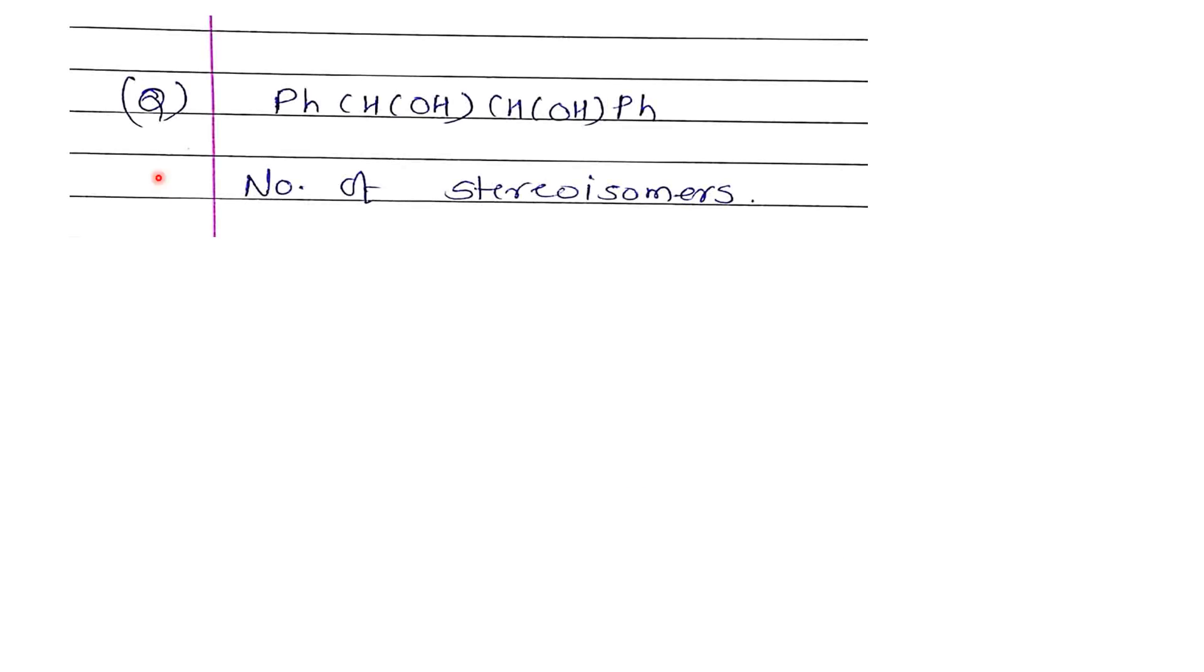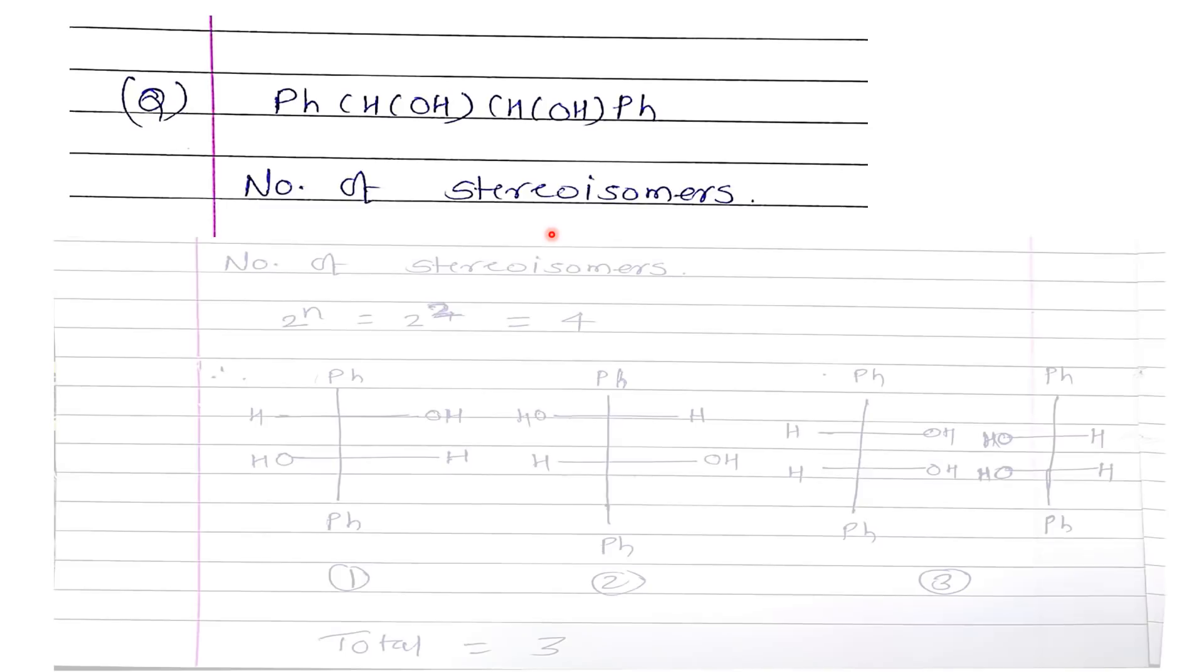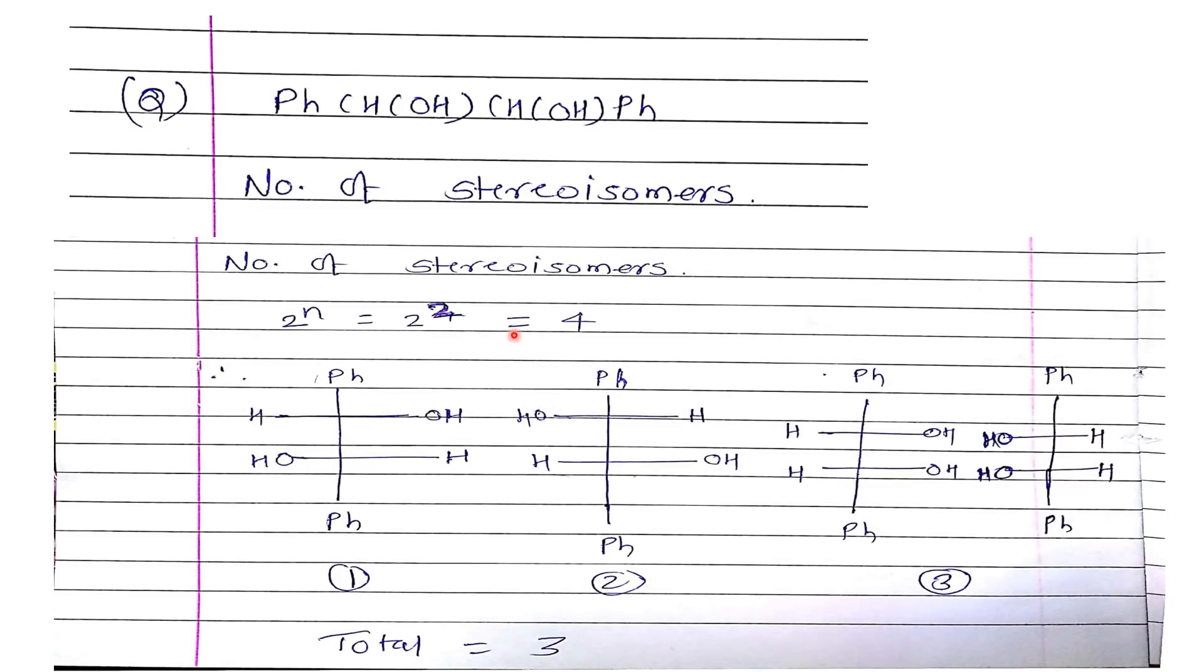Moving on to the next question. There was a question on stereoisomers. Ph-CH(OH)-CH(OH)-Ph. I am writing in reverse. This is the dimer. Do you know about stereoisomers?